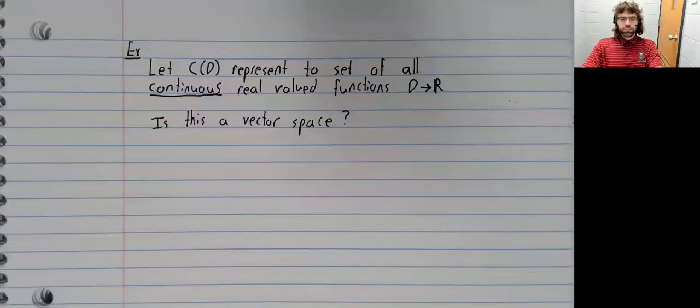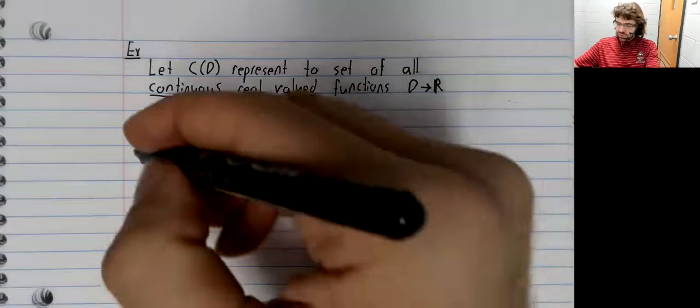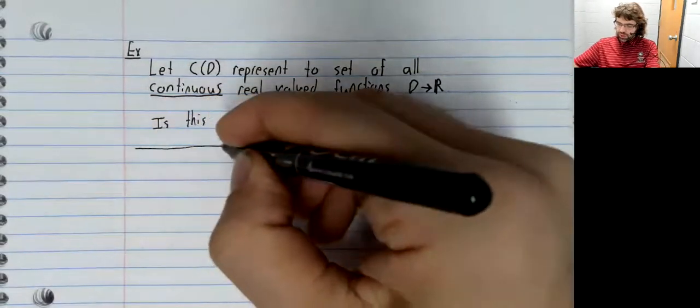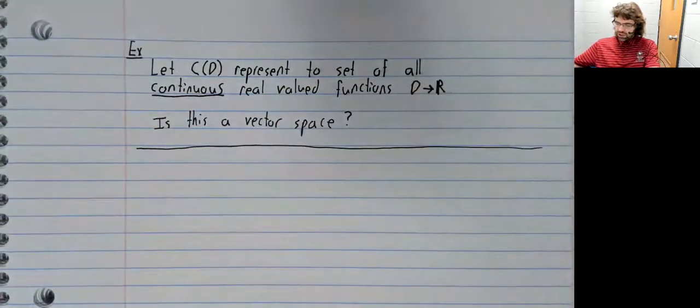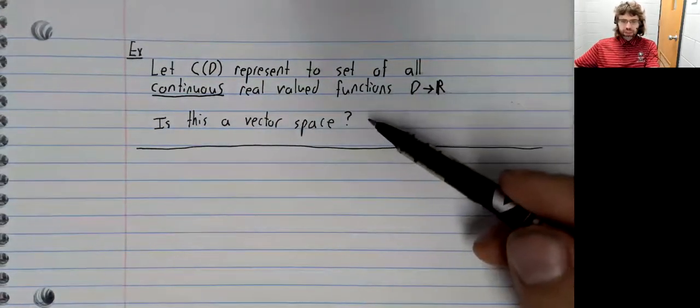For example, let C of D represent the set of all continuous real valued functions from D to R. Is this a vector space? To answer this question,